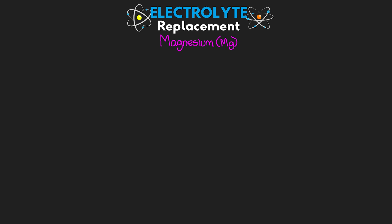The first electrolyte we're going to talk about is magnesium. While it's certainly not uncommon to replace this, it's not our most commonly replaced one — that's actually potassium. The reason I wanted to cover magnesium first is that when you have a patient who needs both magnesium and potassium replacement, you're going to want to replace the magnesium first. Without getting too technical, hypomagnesemia can actually lead to distal potassium secretion in the kidney and ultimately potassium wasting, which can make the patient's hypokalemia refractory to any potassium replacement you're giving them.